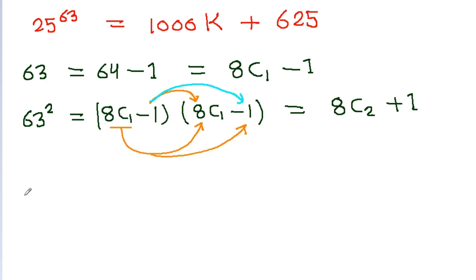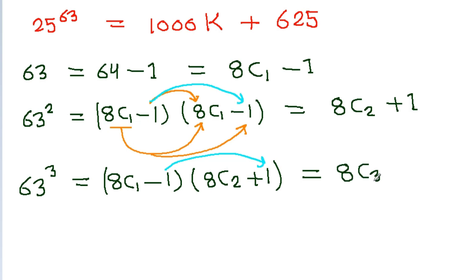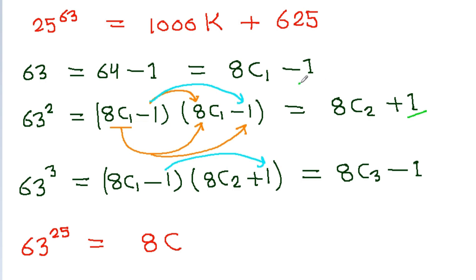Now 63 cubed can be written as 63 into 63 squared, that is (8c₁ − 1)(8c₂ − 1). Here again everything is a multiple of 8 except (−1)(−1) = +1 wait — following the same pattern, 63 to the power 25 equals 8c minus 1, since in even powers we get +1 and in odd powers we get −1, and 25 is odd.